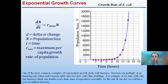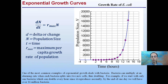Looking at exponential growth curves, this is the growth rate of E. coli. If we apply the same idea, the change in population size over time equals the maximum per capita growth rate of the population. Bacteria are one of the most common examples of exponential growth because they can multiply very fast — each bacterium can split into two cells, and this may only take 18 to 22 minutes, depending on conditions.